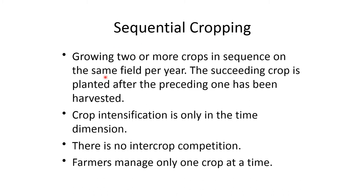Sequential cropping. Growing two or more crops in sequence on the same field per year. The succeeding crop is planted after the preceding one has been harvested. Crop intensification is only in the time dimension. There is no intercrop competition, and the farmer manages only one crop at a time.